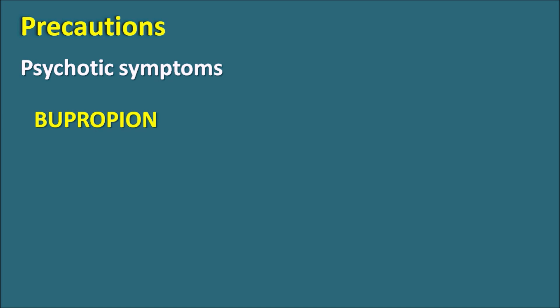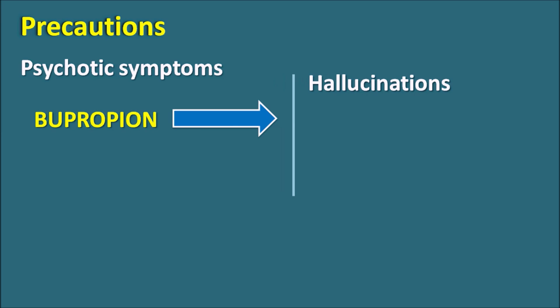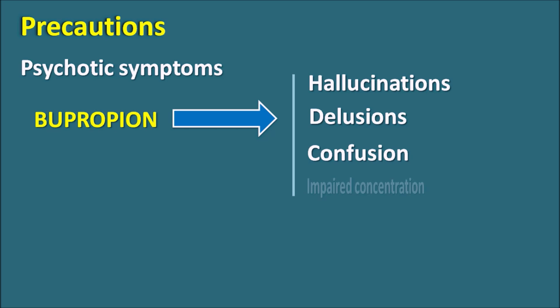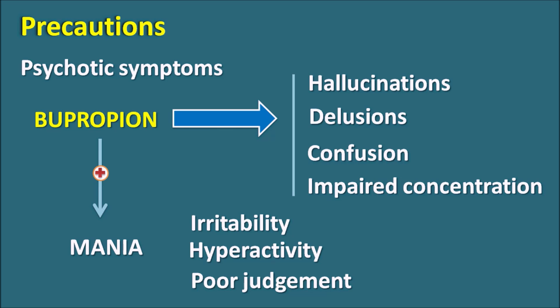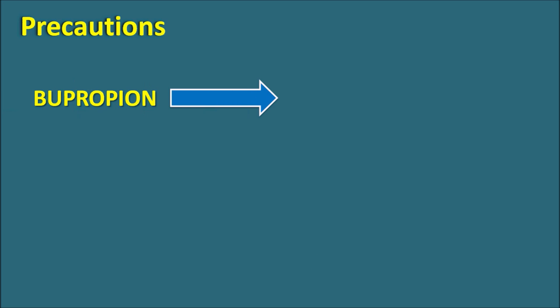An important precaution with bupropion is that it can induce psychotic symptoms such as hallucinations, delusions, mental confusion, and impaired concentration. Additionally, when given for bipolar depression, it can increase the manic phase. Mania is a condition of hyperexcitability characterized by irritability, hyperactivity, poor judgment, and easy distractibility — essentially the opposite of depression. Bupropion should therefore be used with caution in patients with psychosis or mania.